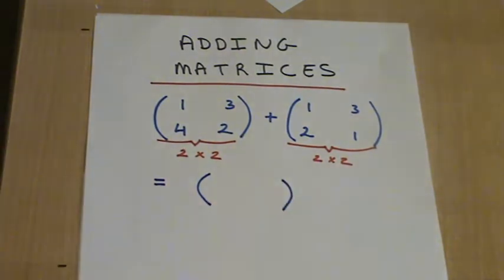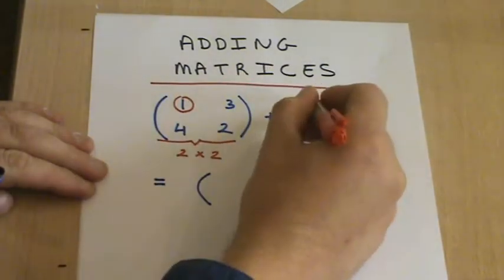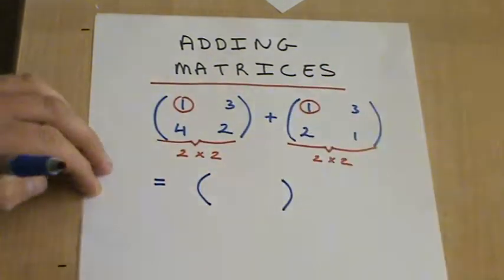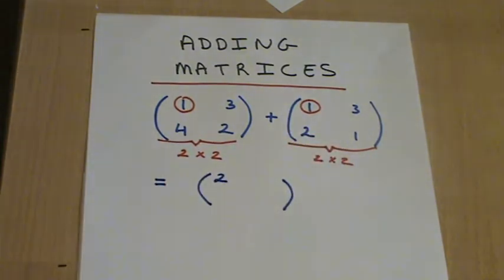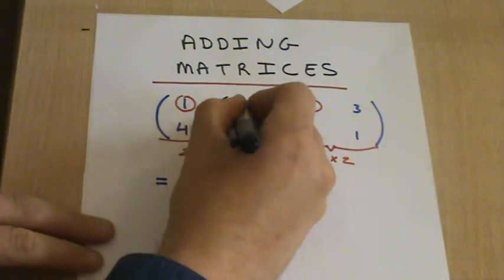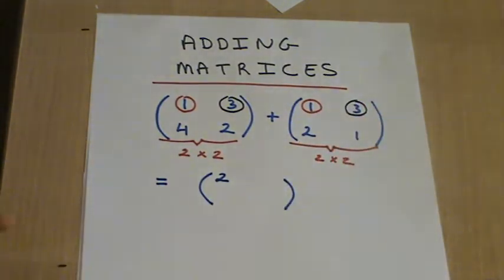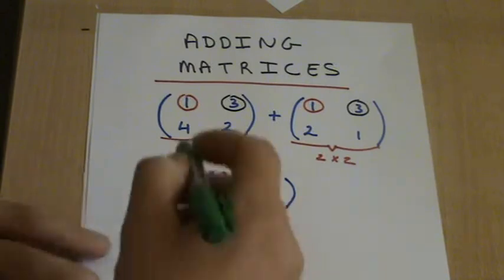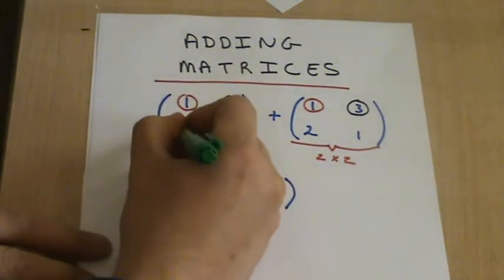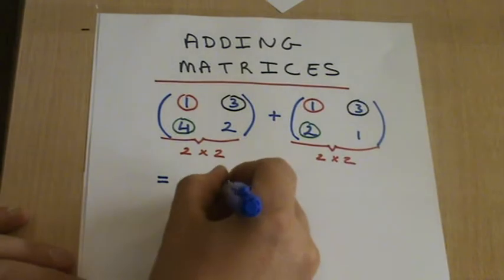When you are adding matrices you just add like terms together. So we are going to add this one with this one and that will give us two. We are then going to add this three with this three and this will give you six. We are then going to add the four and the two which gives you six also.